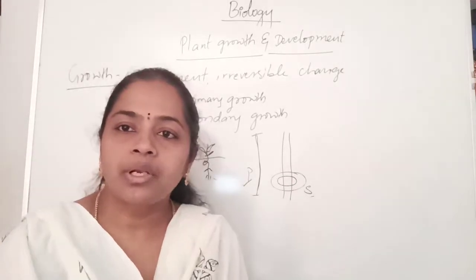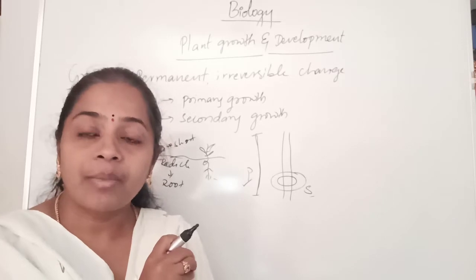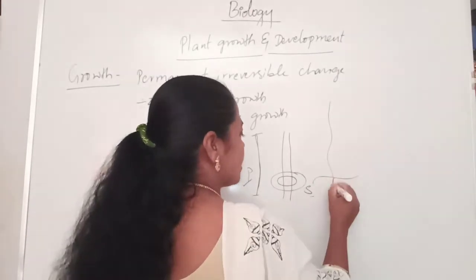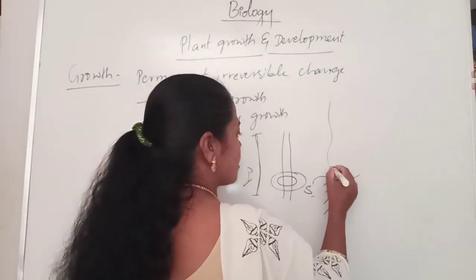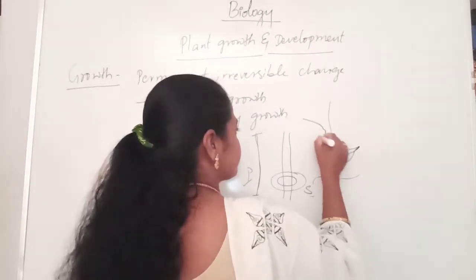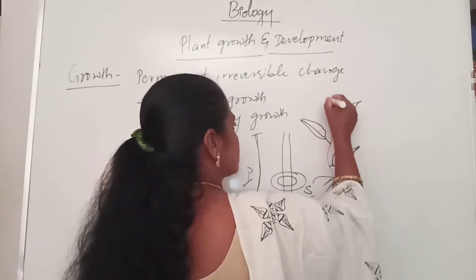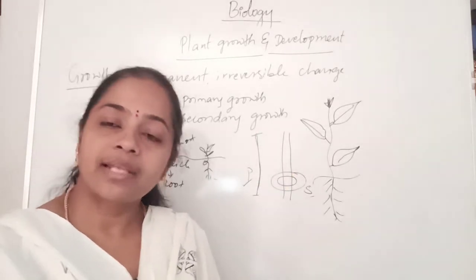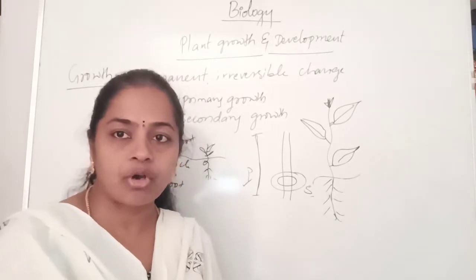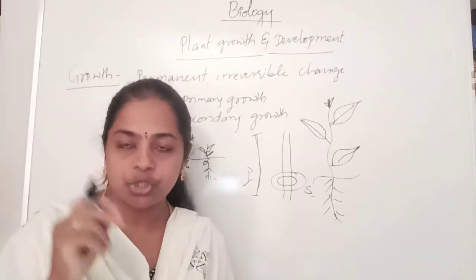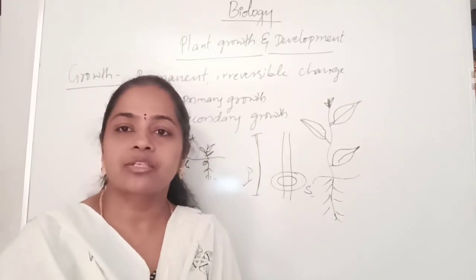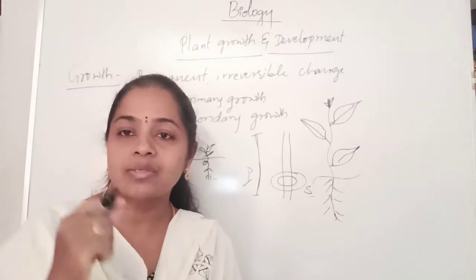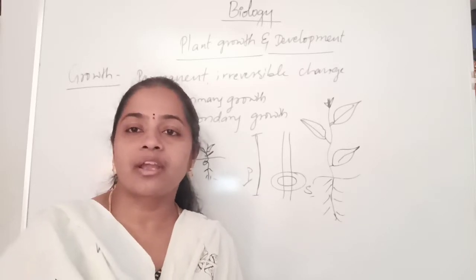Primary growth is responsible for growth in certain regions of the plant. In the plant we have a root system, and apex parts are present. Growth occurs where meristematic tissues are present. Plants contain two types of tissues: meristematic tissues and permanent tissues. In meristematic tissues, cell division will occur, because meristematic tissues have the special property of rapid cell division.